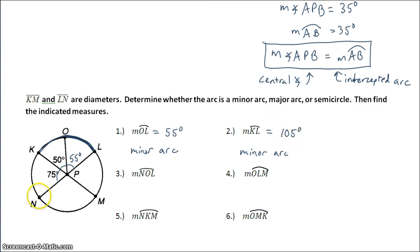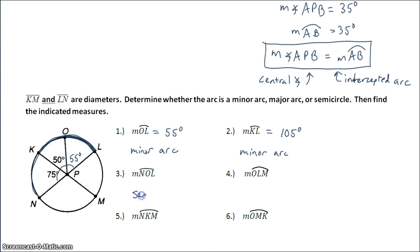Arc NOL: NL is a diameter, which means arc NOL is a semicircle, and its measure is going to be 180 degrees.